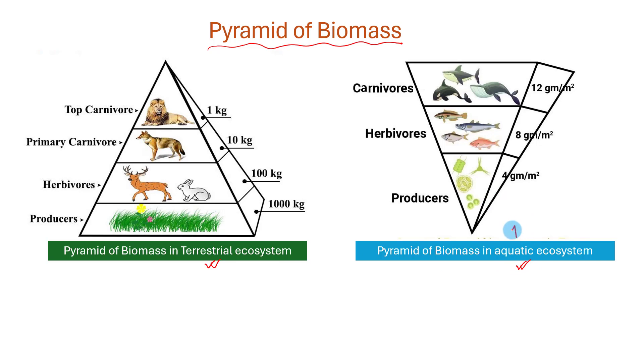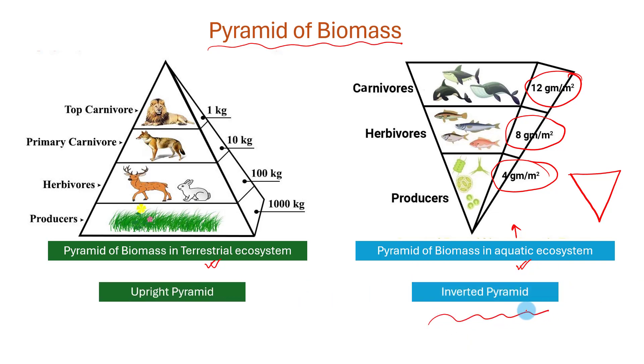In an aquatic environment, the mass of organisms is less at the producer level and it increases towards the upper level of consumers. So, the shape of the pyramid is inverted. This type of pyramid is called an inverted pyramid. The normal one is called an upright pyramid.